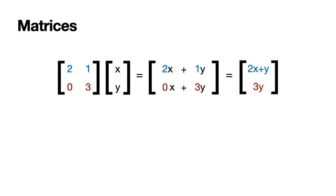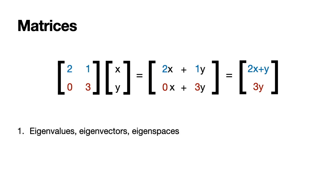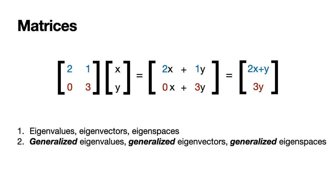But this looks like some formulaic mumbo-jumbo. Is there a nice picture attached? Luckily the answer is yes. In this video I'll show you this picture and also some very important concepts: eigenvalues, eigenvectors, and eigenspaces, and the second set: generalized eigenvalues, generalized eigenvectors, and generalized eigenspaces. So let's begin.